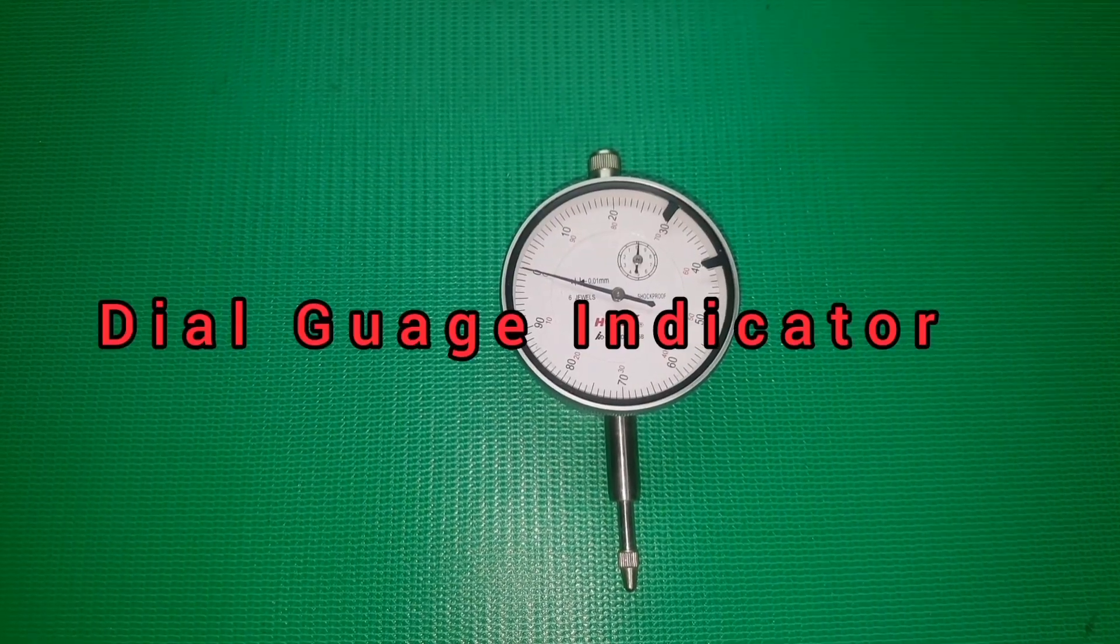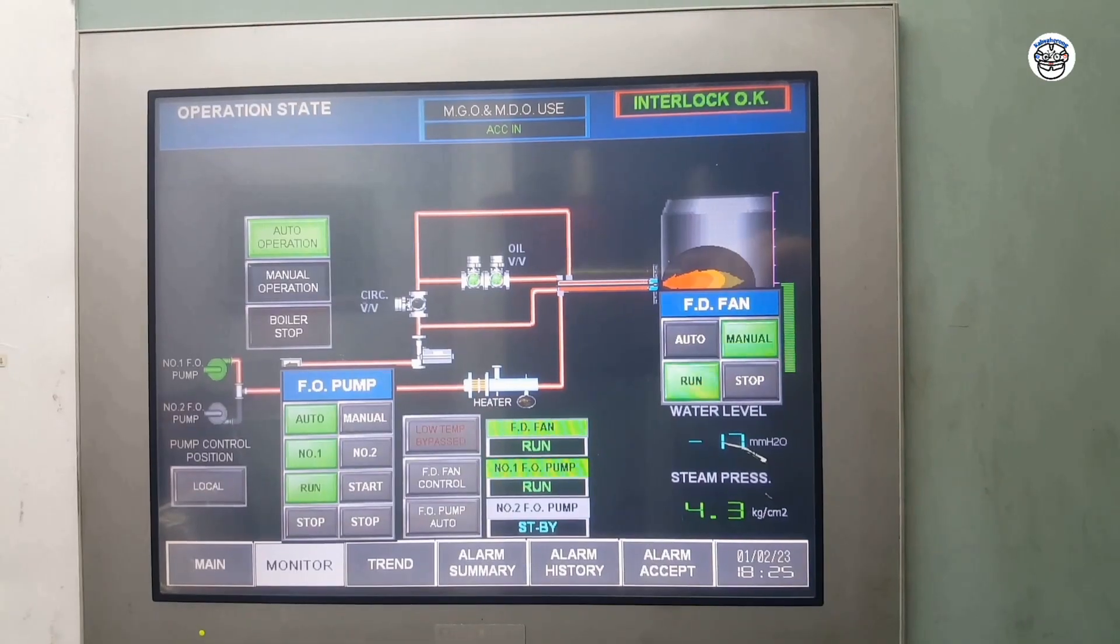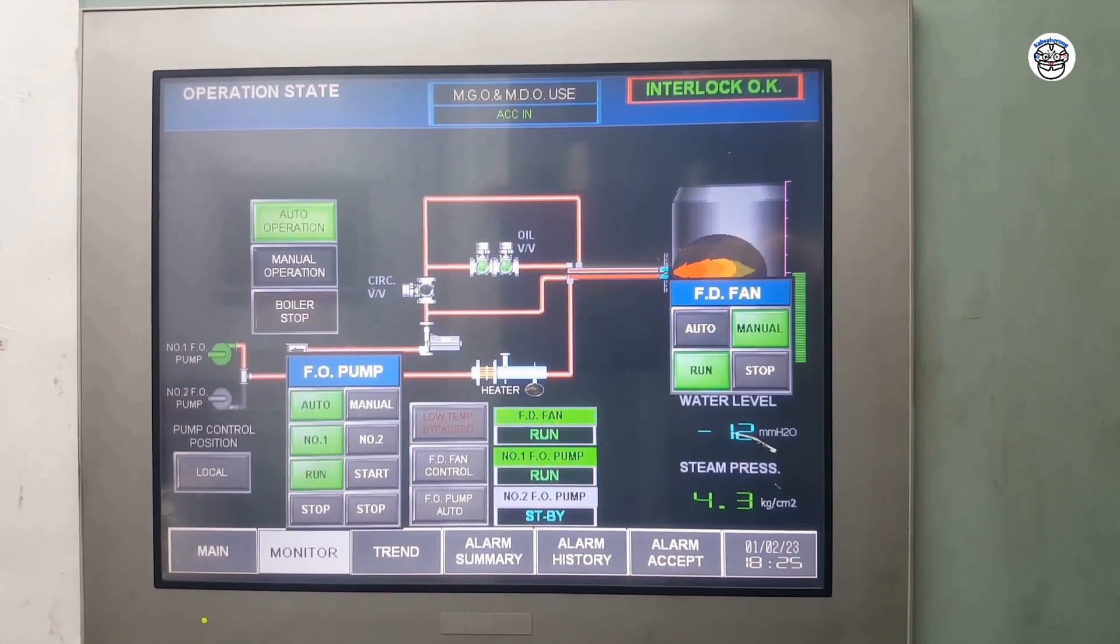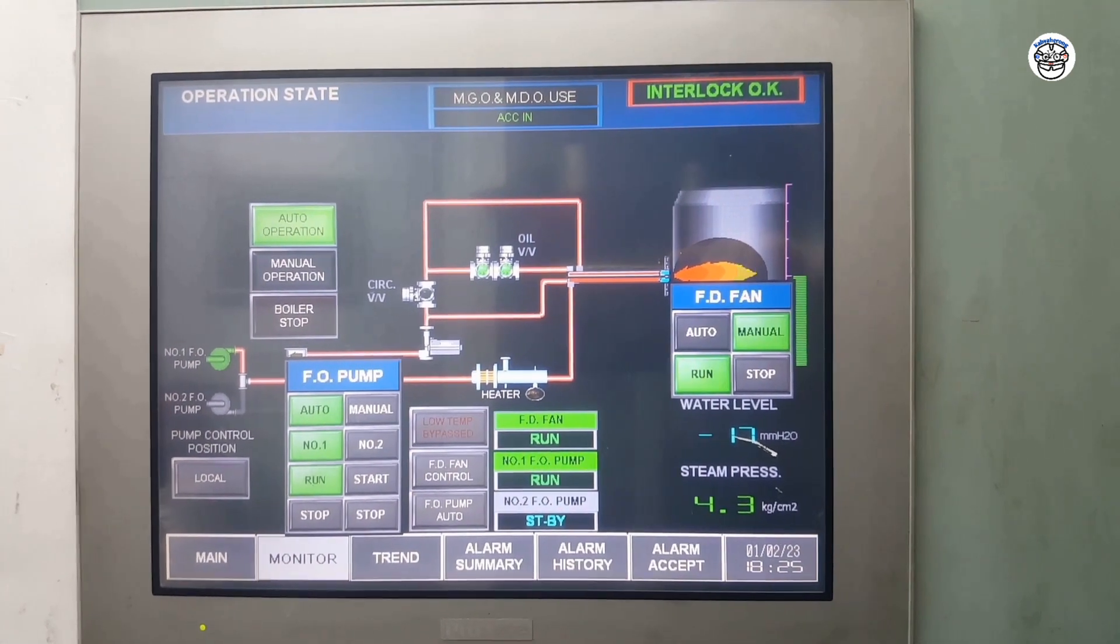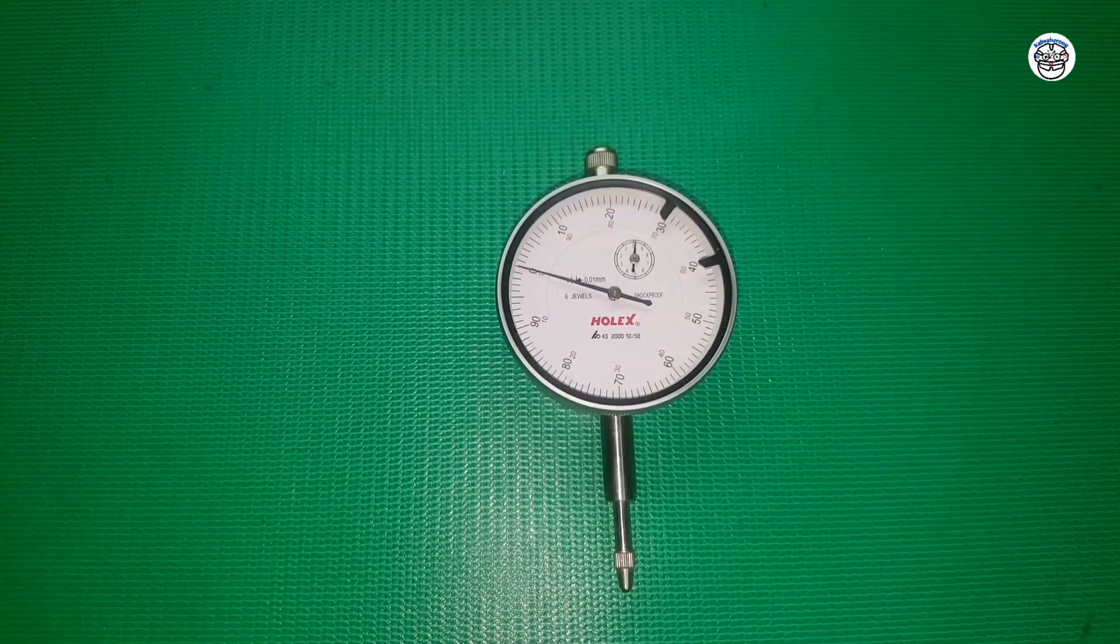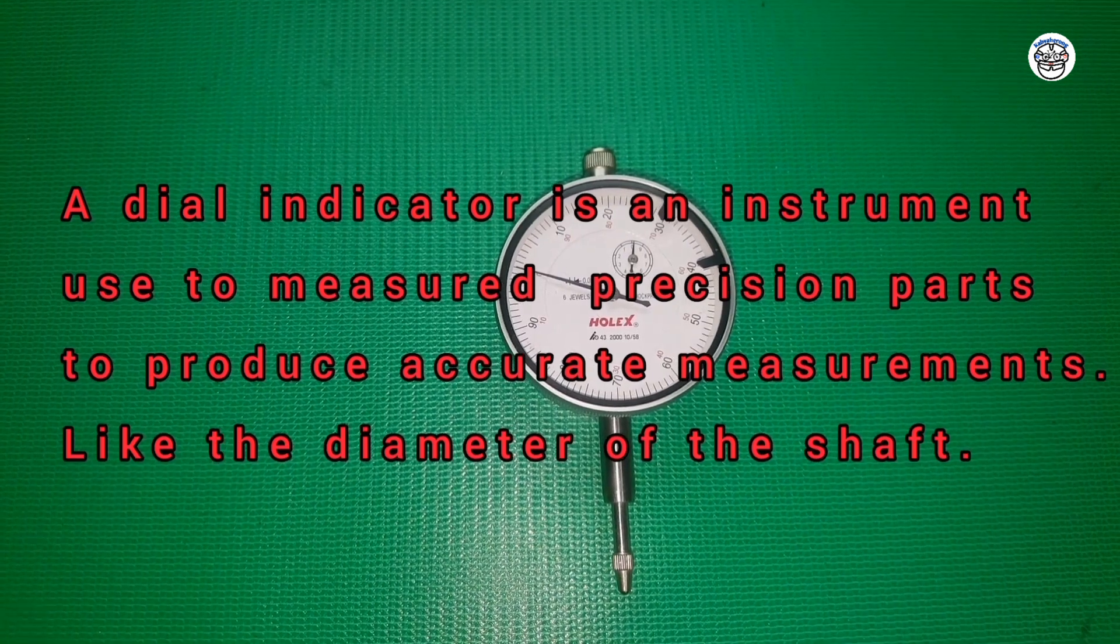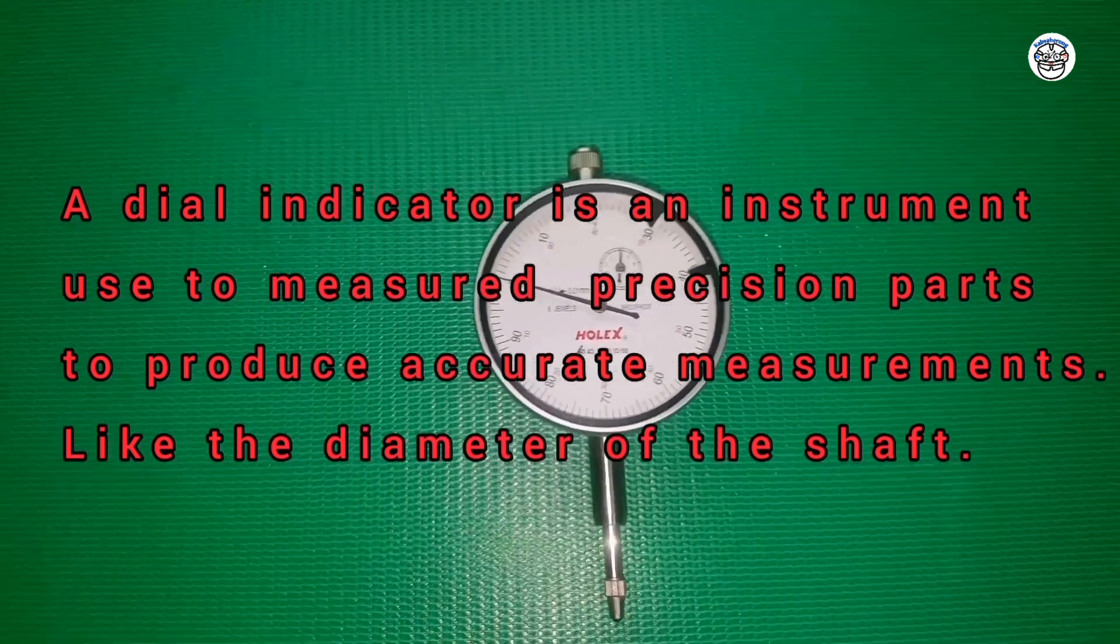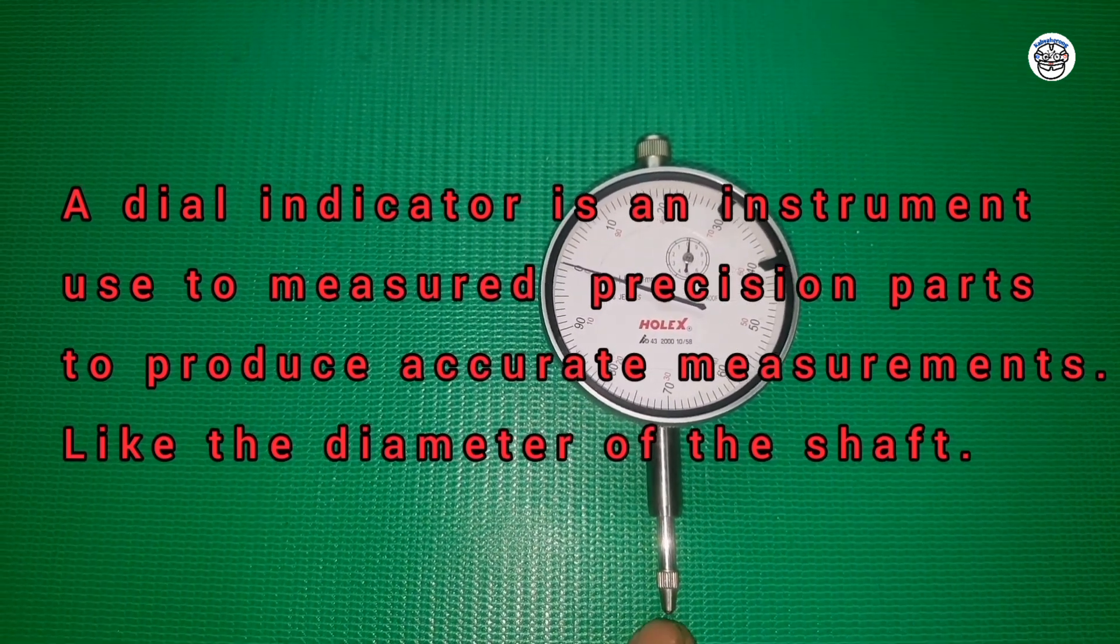Necessary things on board. Dial gauge indicator. A dial indicator is an instrument used to measure precision parts to produce accurate measurements, like the diameter of the shaft.